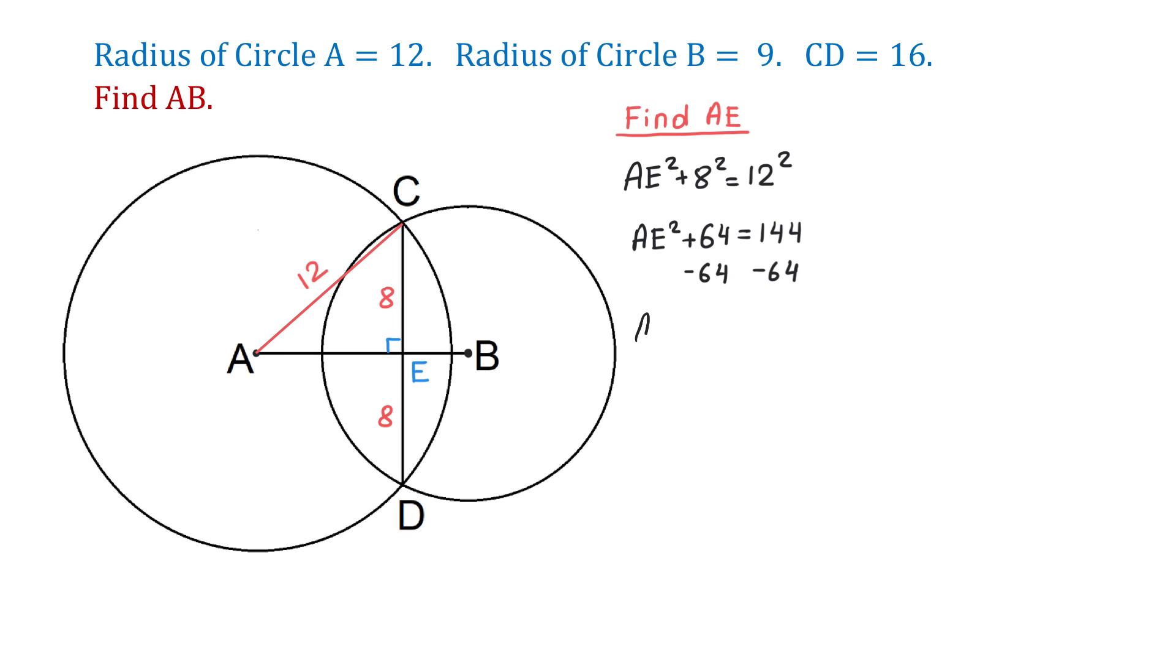Then AE squared equals 80. Now, to find AE, we will take the square root of 80. Then to simplify this radical, we will write 80 as a product of 16 and 5. Then square root of 16 is 4, and AE will be equal to 4 square root of 5.